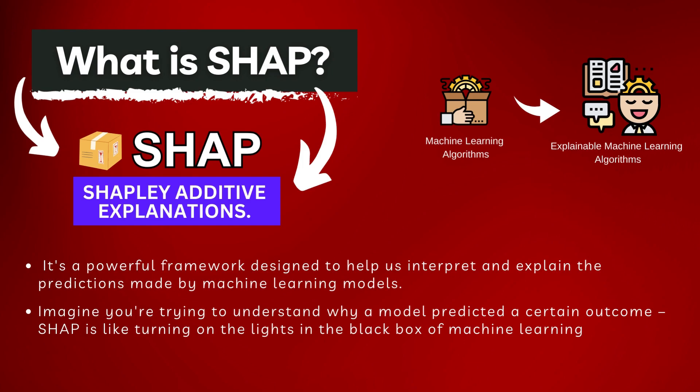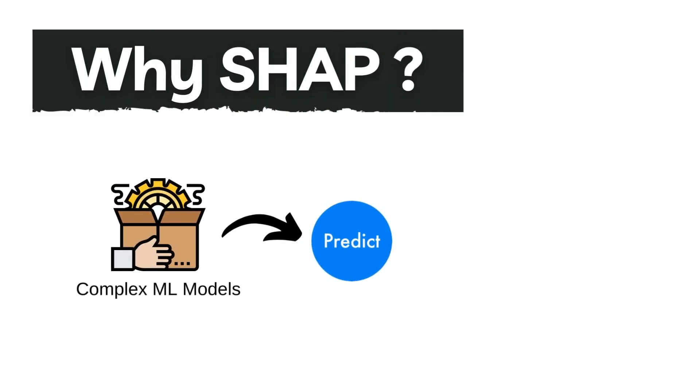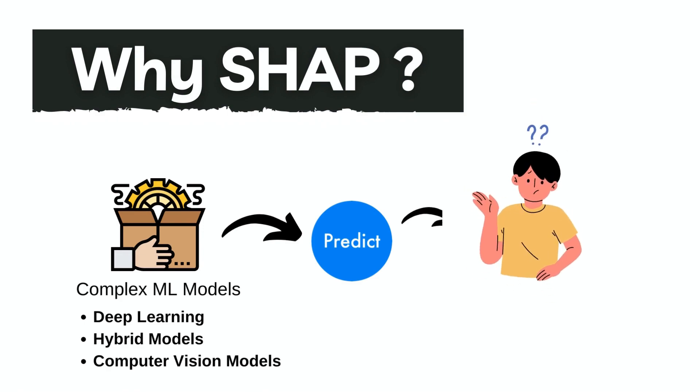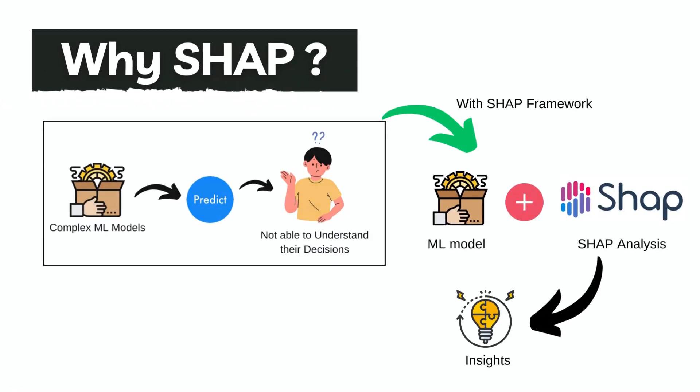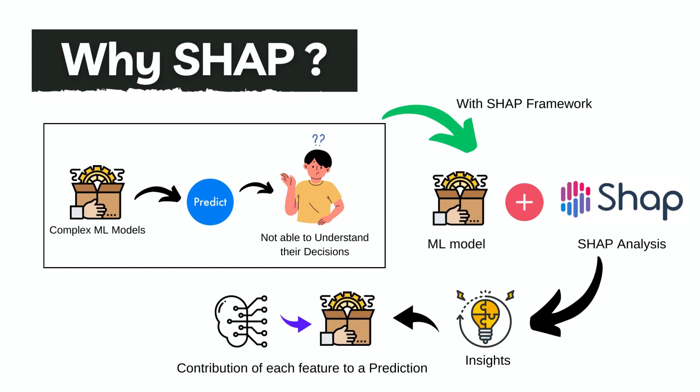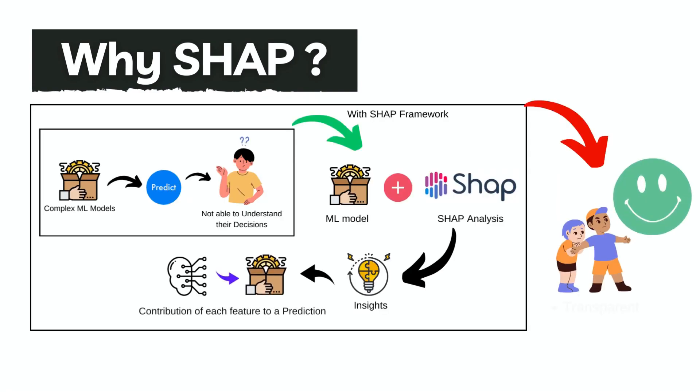Now you might wonder why do we need SHAP in the first place. Well, as machine learning models become more complex by implementing deep learning and other complex frameworks, understanding their decisions becomes crucial. SHAP gives us insight into the contribution of each feature to the prediction, making the model's behavior more transparent and trustworthy, thus achieving explainable AI.